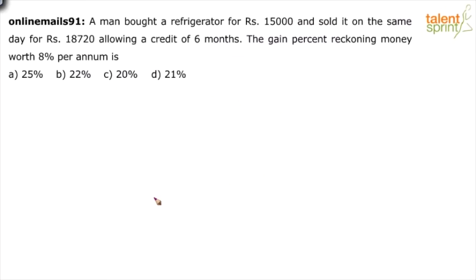A man bought a refrigerator for rupees 15,000 and sold it on the same day for rupees 18,720, allowing a credit of six months. The gain percent, reckoning money worth eight percent per annum — I think I will have to make the question a little clearer. A man bought a refrigerator for 15,000 and sold it on the same day for 18,720, allowing a credit of six months. Credit of six months means he says: pay me the money after six months. So he will get the amount only after six months. Now what is the gain percentage?